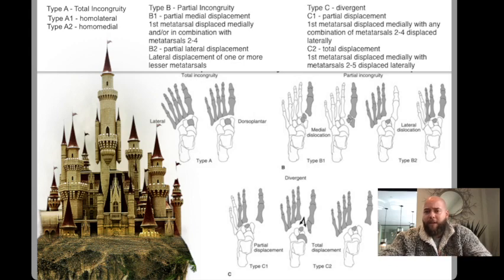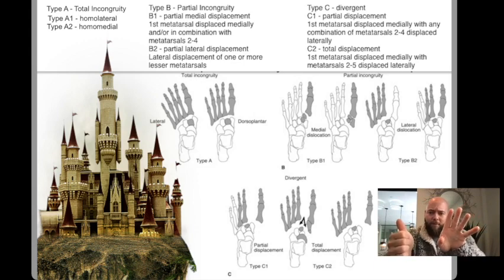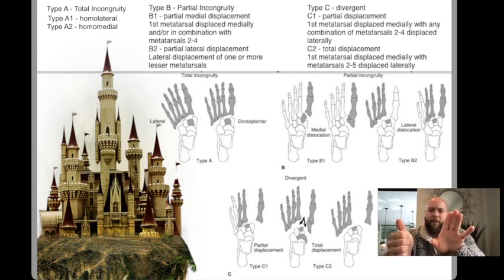In C, it's divergent. In any case, the first metatarsal is dislocated medially, and any number of the lesser metatarsals are lateral. The best case scenario is only a few of the lesser metatarsals are lateral. The worst case is C2, where all four of the lesser metatarsals are lateral.